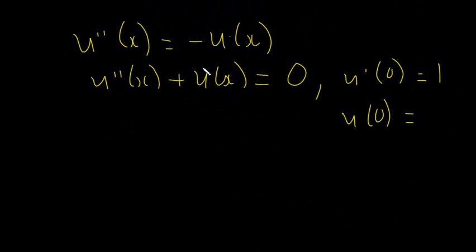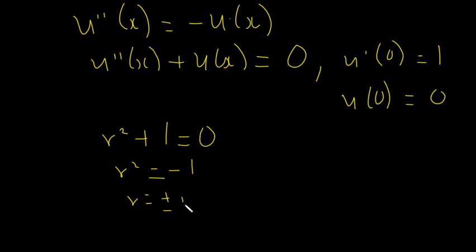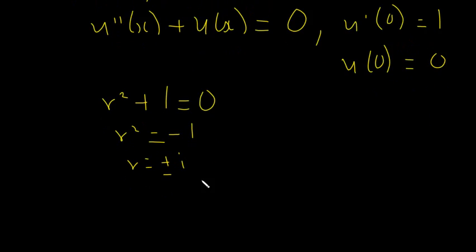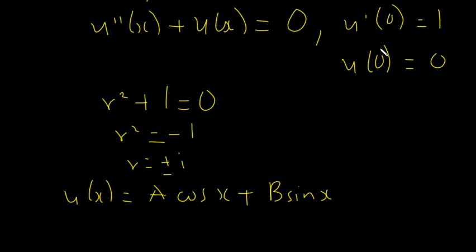Now we have an initial value problem: u''(x) + u(x) = 0, with u(0) = 0 and u'(0) = 1. Using the characteristic equation r² + 1 = 0, we get r² = -1, so r = ±i. Since we have complex conjugates, the general solution is u(x) = A cos(x) + B sin(x).